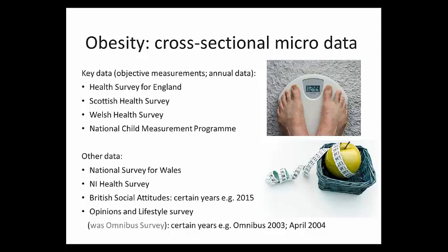For example, the Northern Ireland survey doesn't have obesity measurements but contains questions about weight control and perceptions of children's weight. Within the British Social Attitudes Survey, from time to time there are relevant questions — in 2015 there were questions on perceptions of obesity and prioritisation of expenditure on health conditions including obesity. So it's worth going to the data catalogue and looking around, because beyond the core datasets there are other things of interest too.